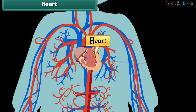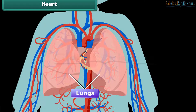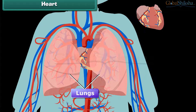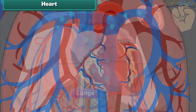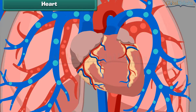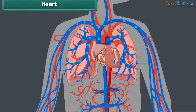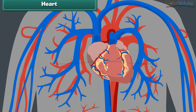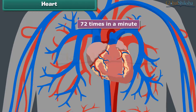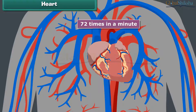Heart: The human heart is located in the chest cavity between the two lungs, a little to the left of the center of the human body. It is conical in shape and the size of a clenched fist. It is a bag of muscles responsible for pumping blood filled with oxygen and other nutrients throughout the body. The human heart beats 72 times in a minute and works continuously without getting tired.